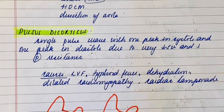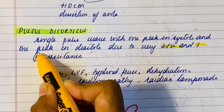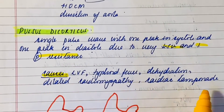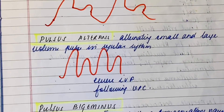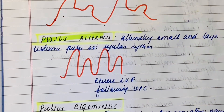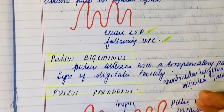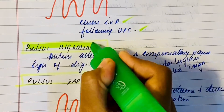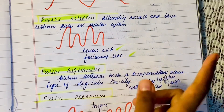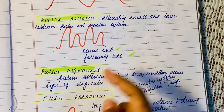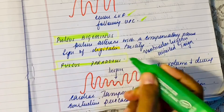Pulsus dicrotic is a single pulse wave with one peak in systole and one peak in diastole, due to decreased stroke volume and decreased peripheral resistance. It can be seen in typhoid fever, dehydration, dilated cardiomyopathy, and cardiac tamponade. Pulsus alternans is alternating small and large volume pulse in regular rhythm, occurring in severe left ventricular failure or following a VPC. Pulsus bigeminus is like pulsus alternans but with a compensatory pause, and it is a sign of digitalis toxicity.